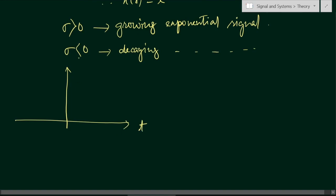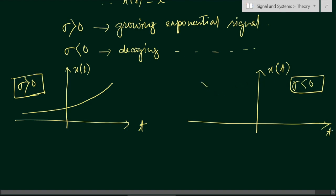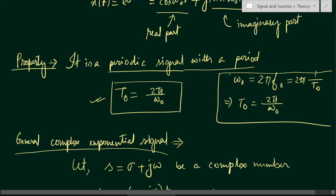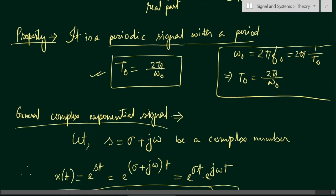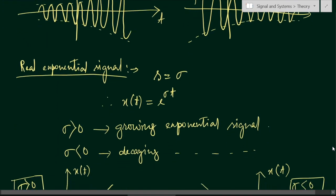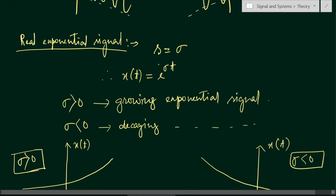Graphically, for the real exponential signal x(t) = e^(σt): when σ > 0, we have a growing exponential curve; when σ < 0, we have a decaying exponential curve where the amplitude decreases over time.